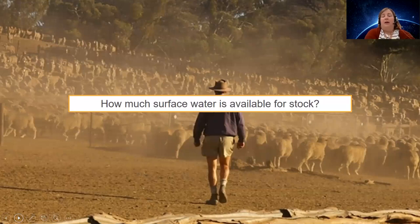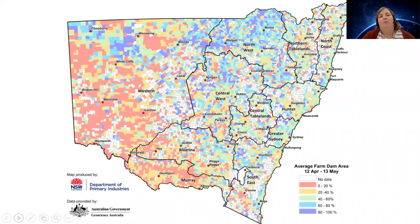We've also addressed another question, particularly relevant to the dry parts of Australia where people are grazing stock: how much surface water is available for stock? Every single month, together with our collaborators in the New South Wales state government, we produce a map that takes the latest satellite observations across the state and tells you how much water is present compared to the maximum possible if every water body were completely full. This has been a really powerful tool for agricultural managers to understand the availability of surface water across the state.